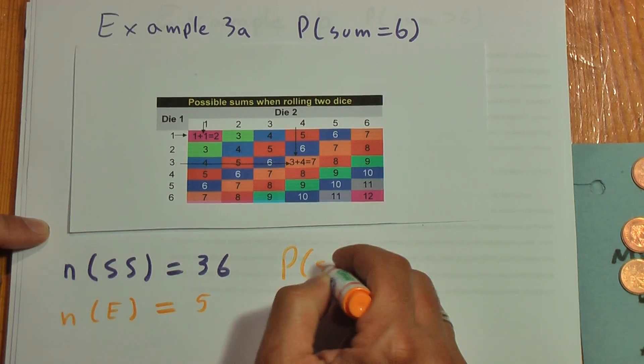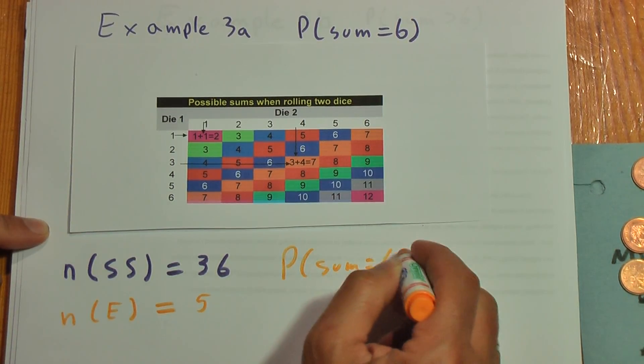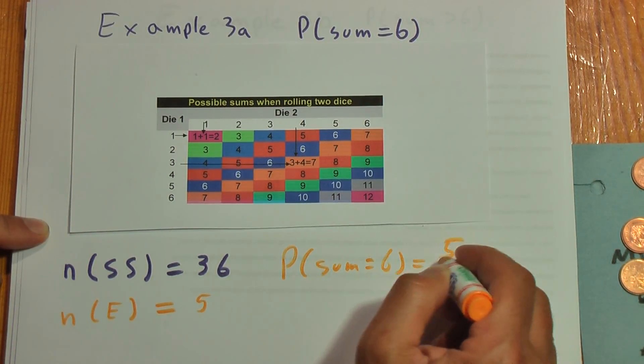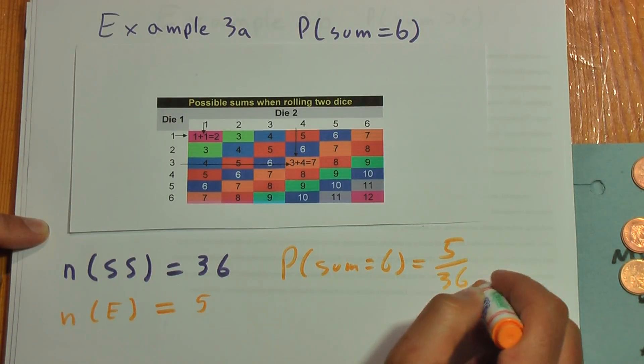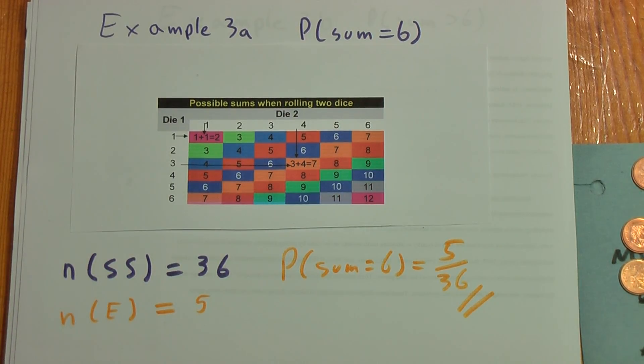Therefore, the probability that the sum equals 6 equals 5 over 36. And you can convert this to decimal if you like.